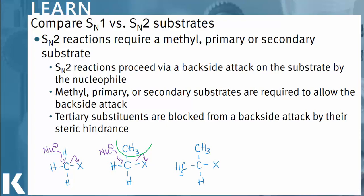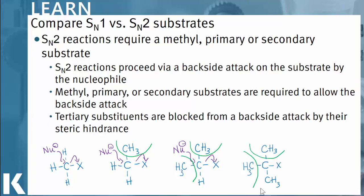Continuing on, we have a secondary substrate, which is secondary because there are two carbons attached to our electrophile in the middle. Our nucleophile is able to undergo attack on the electrophile, but there is significant hindrance provided by these additional groups. Finally, our tertiary carbon has so much steric hindrance that the nucleophile is unable to get access to the electrophile in the middle. The trend is clear: the more substituents attached to our electrophile in SN2 reactions, the slower and more hindered the reaction will proceed.